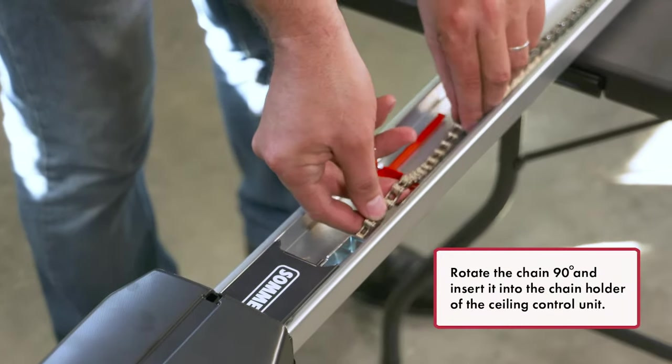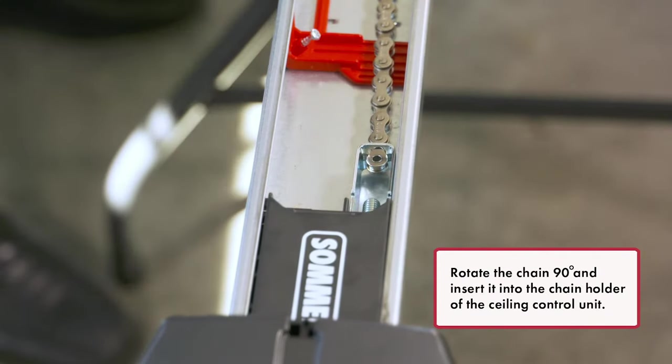Rotate the chain 90 degrees and insert it into the chain holder of the ceiling control unit.